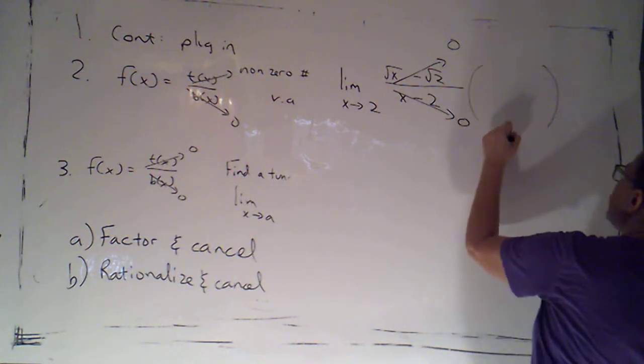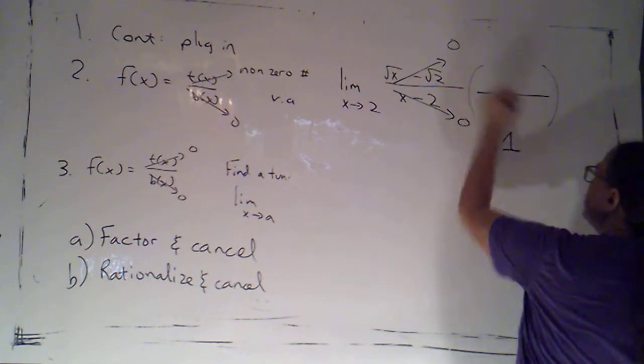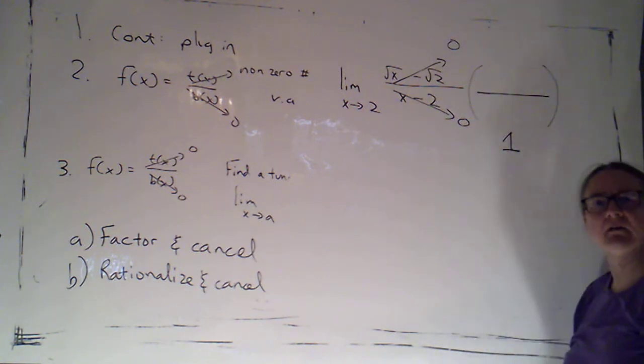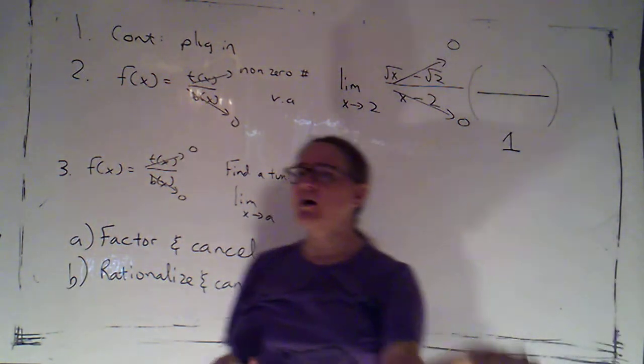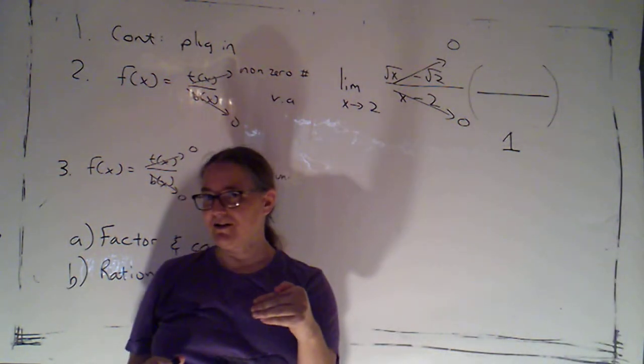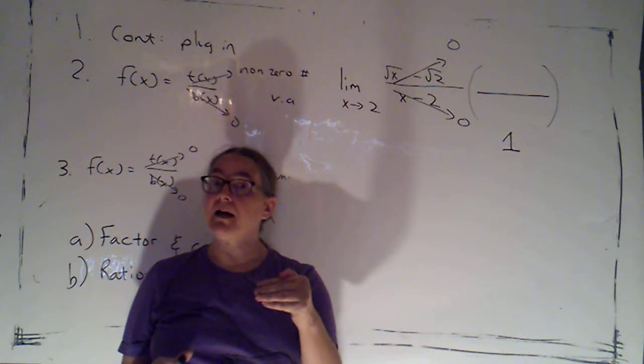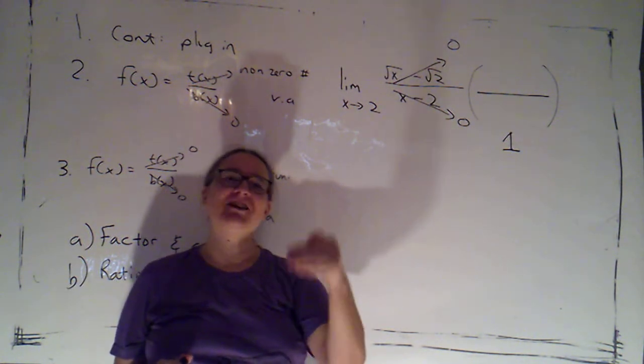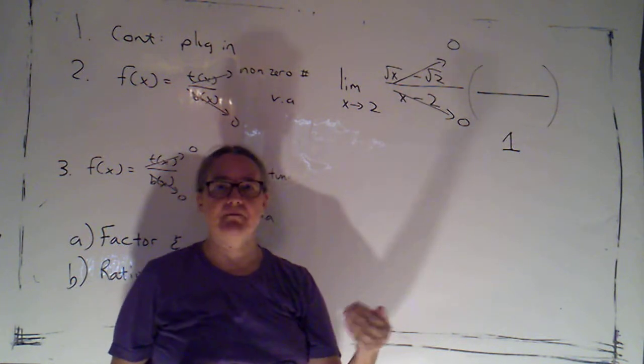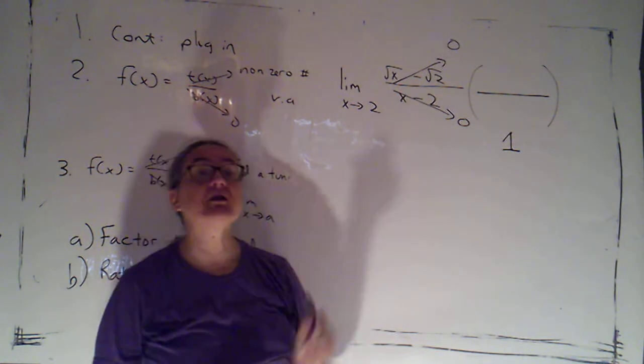And I'm going to do that by multiplying by one. We multiply by one a lot in math. That's because multiplying by one doesn't change the value of what I have. But if I use a convenient form of one, then I can change the way that thing looks. What I'm going to use here is the conjugate.